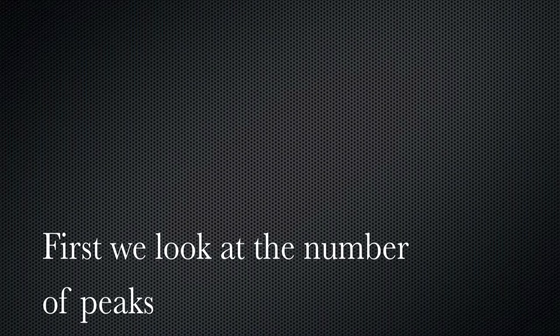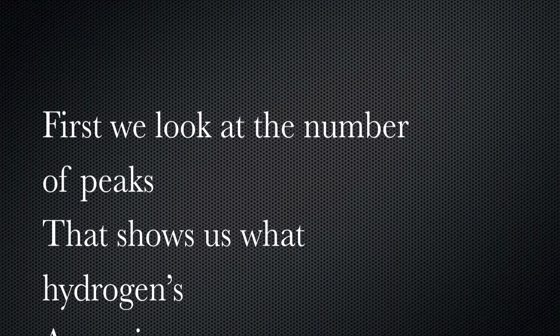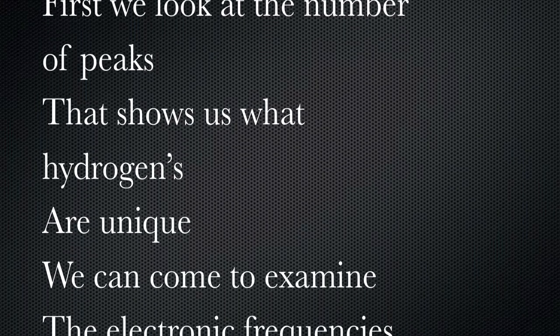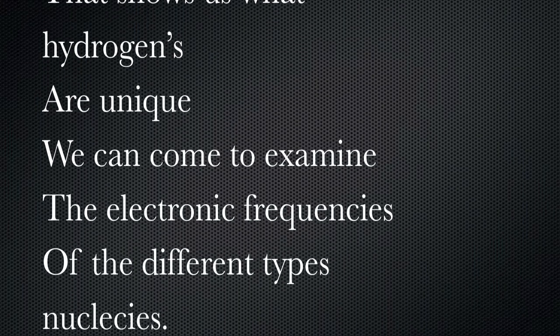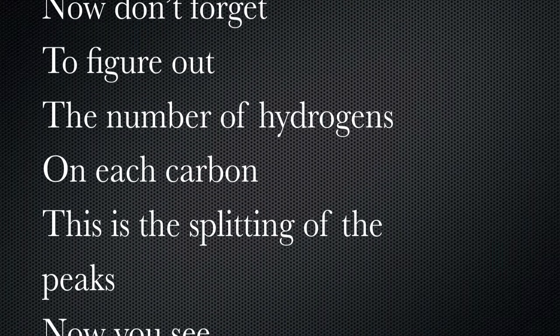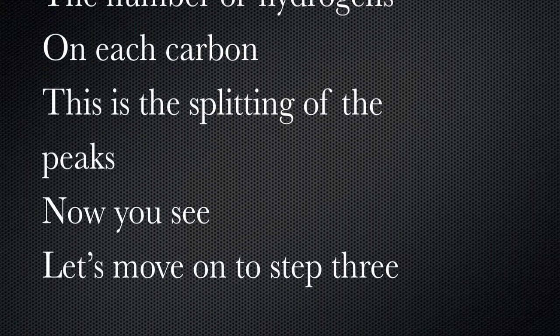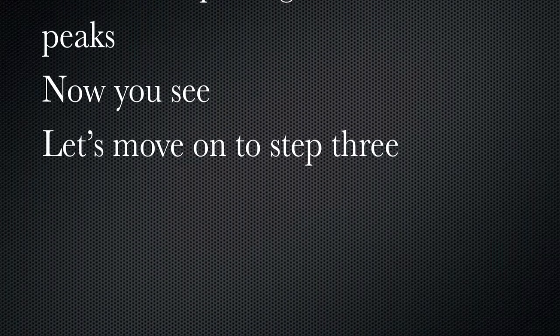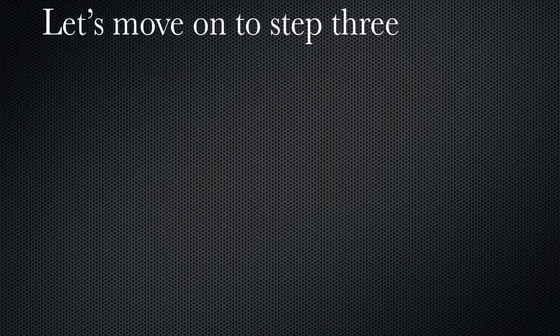Look at the number of peaks — that shows us when hydrogens are unique. You can come to examine the electron frequencies of the different types of nucleuses. Now don't forget to figure out the number of hydrogens on each carbon. This is splitting on the peaks, now you see — let's move on to step three.